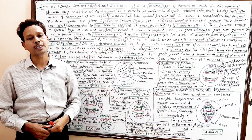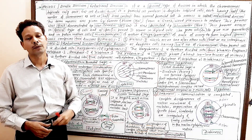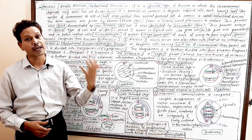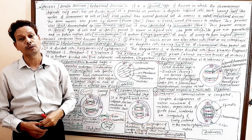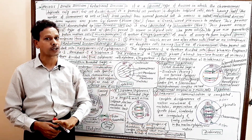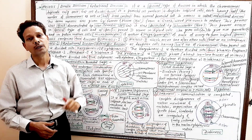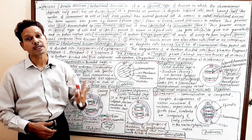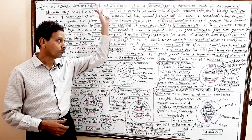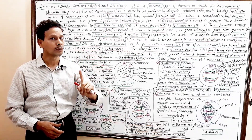Dear students, today we will discuss a very common topic for all BSc students — botany, zoology, 10th, and plus 2 — because it is a common chapter. Before this topic, we have already covered two important topics: cell cycle and mitosis.